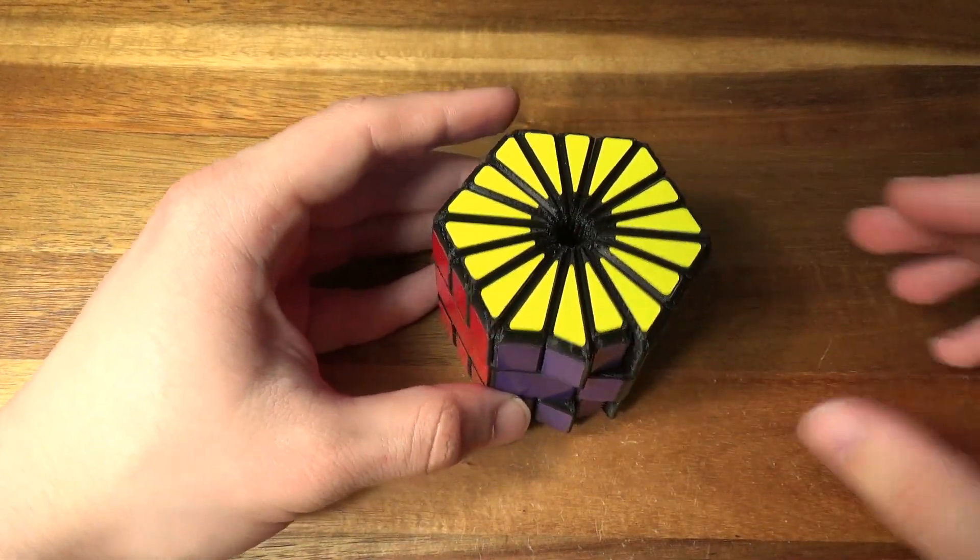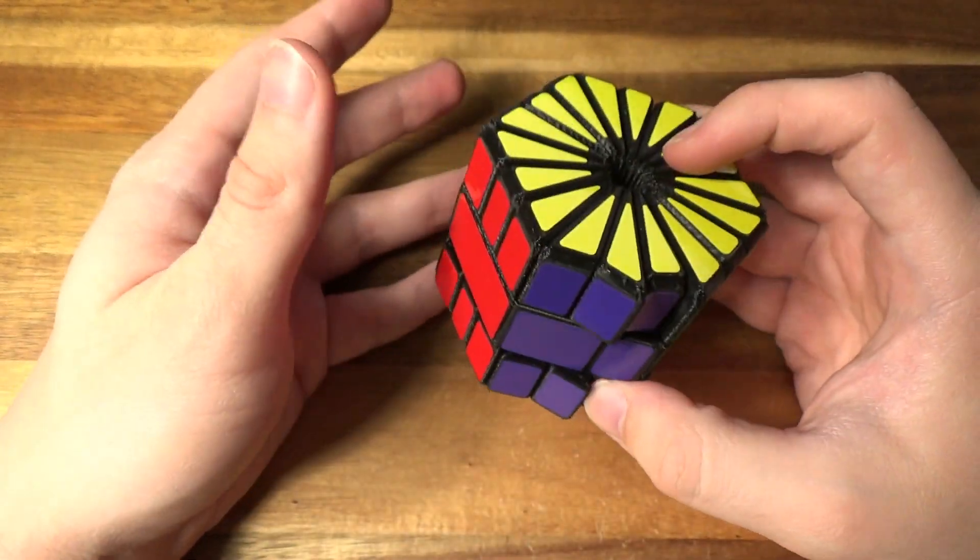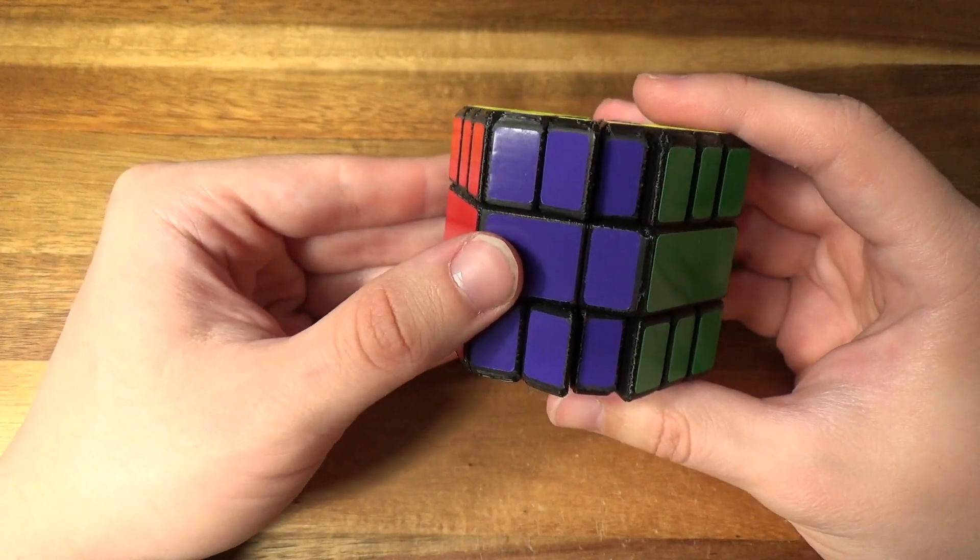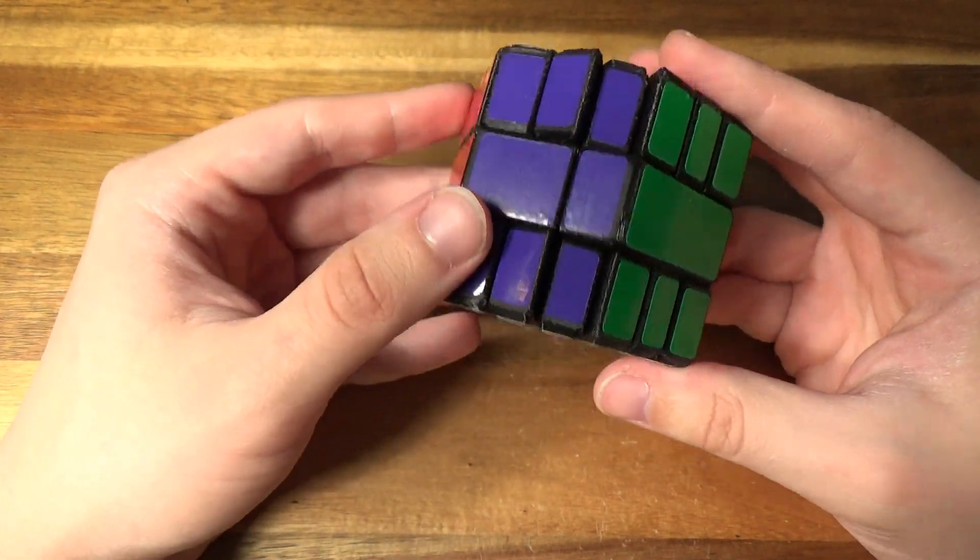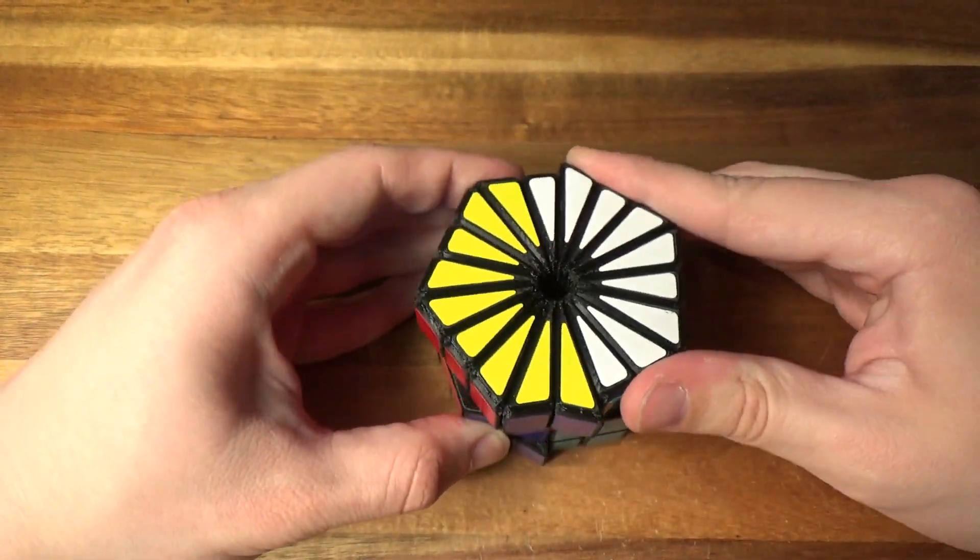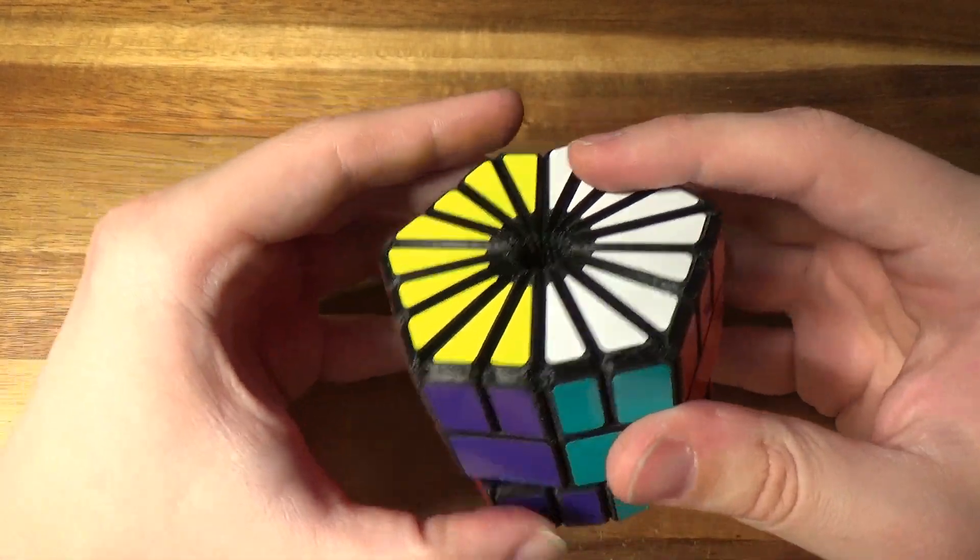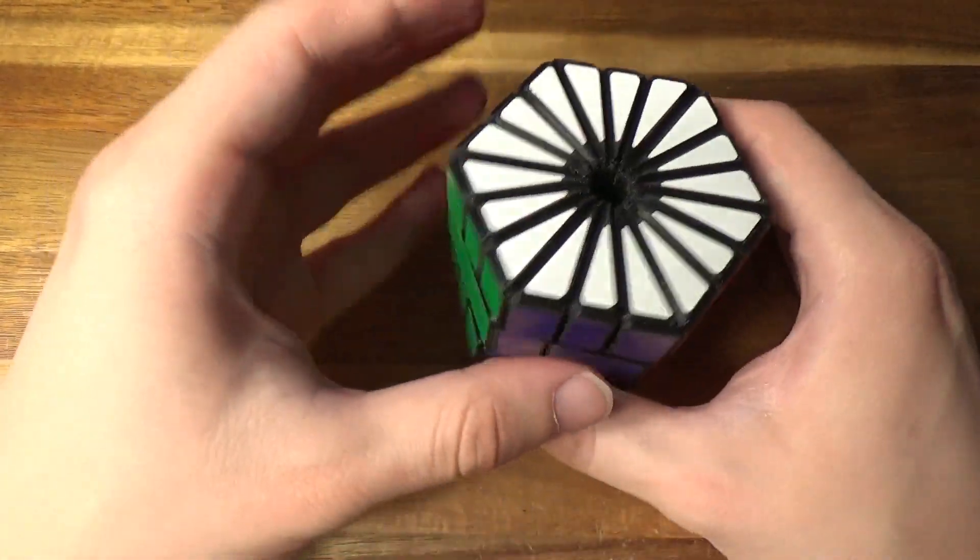And now we have just the result of a single algorithm. So rather than speeding this part up, I'll let you watch it in real time. So you can see my final moves of the Hexagon 2. And here we are. The Hexagon 2 is finally solved.